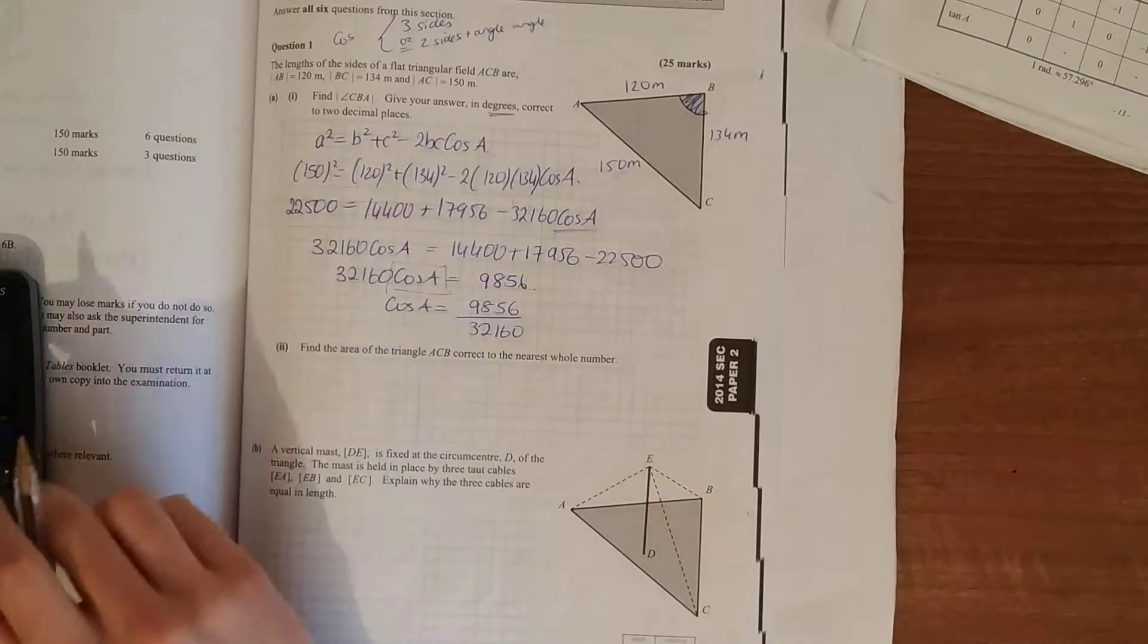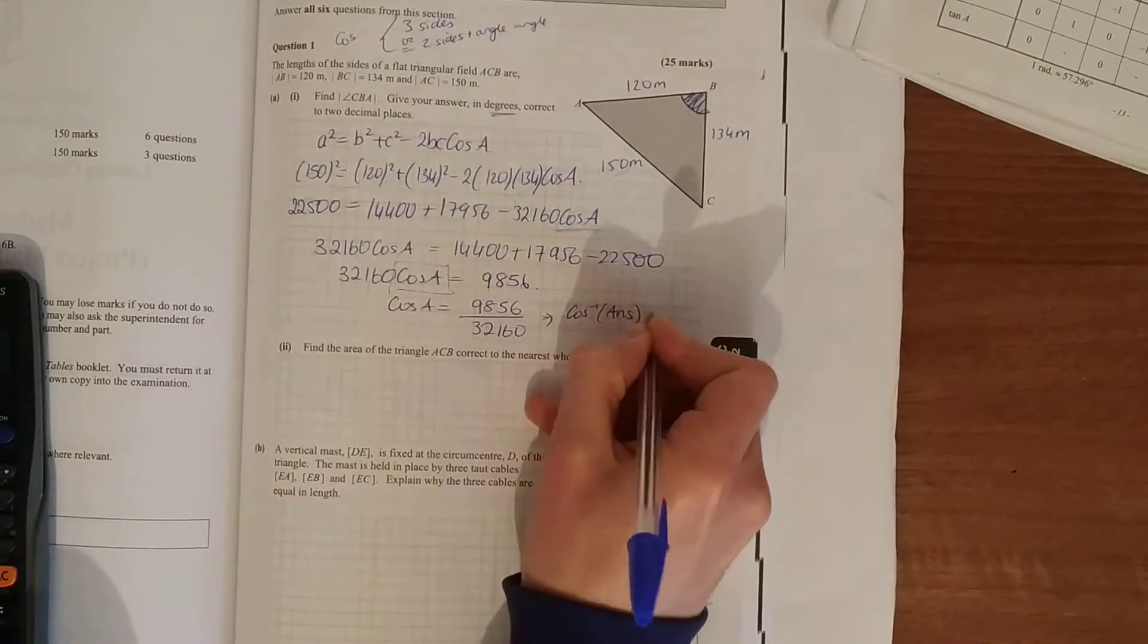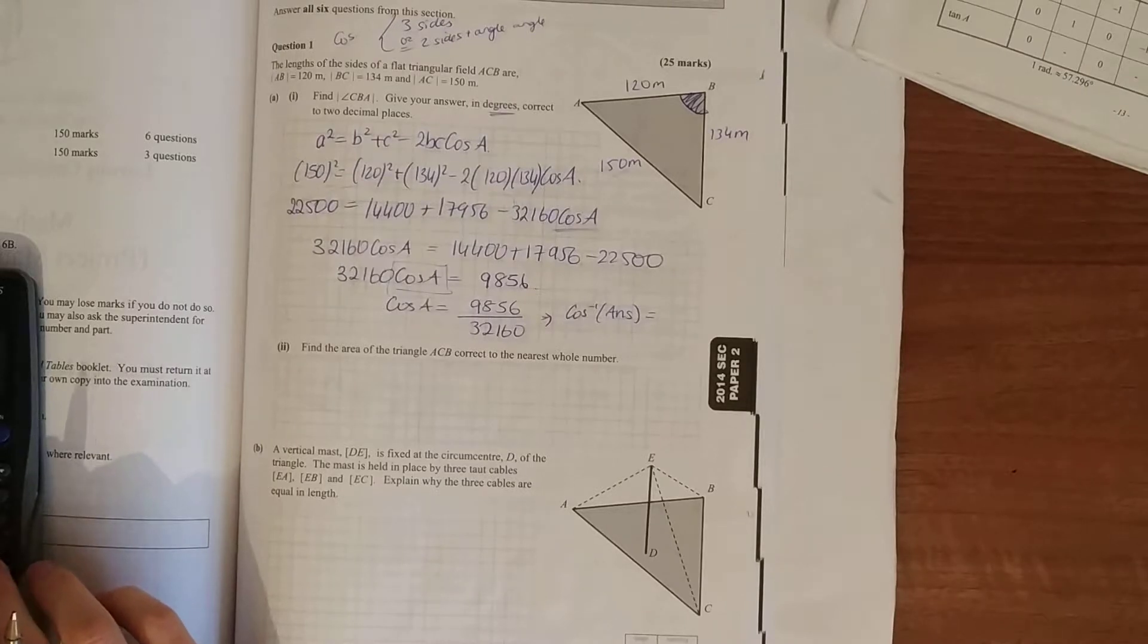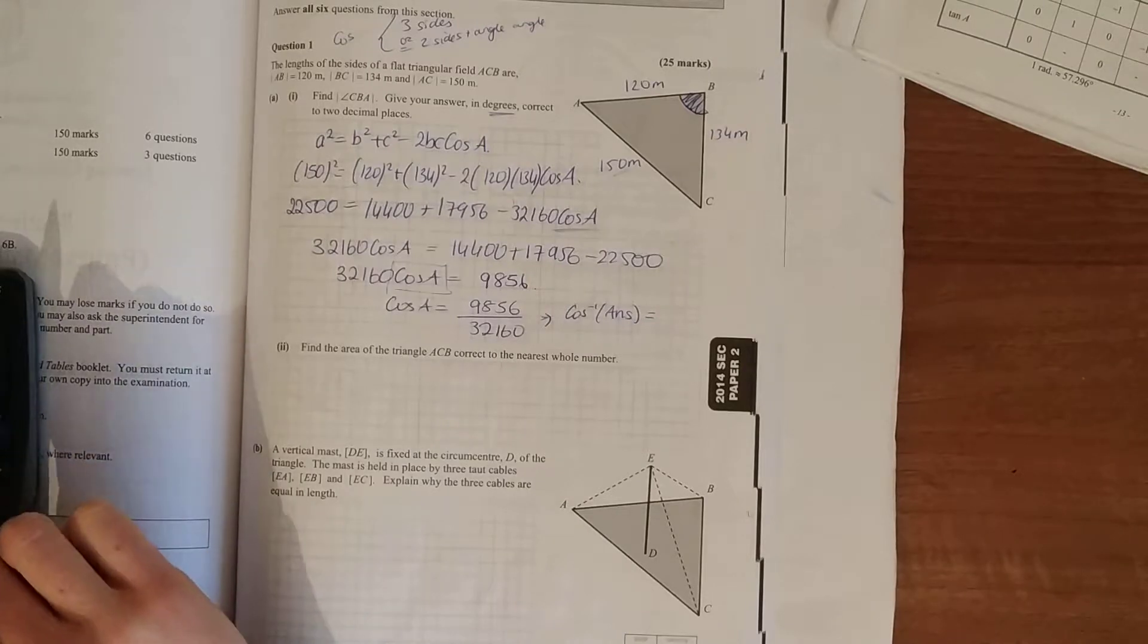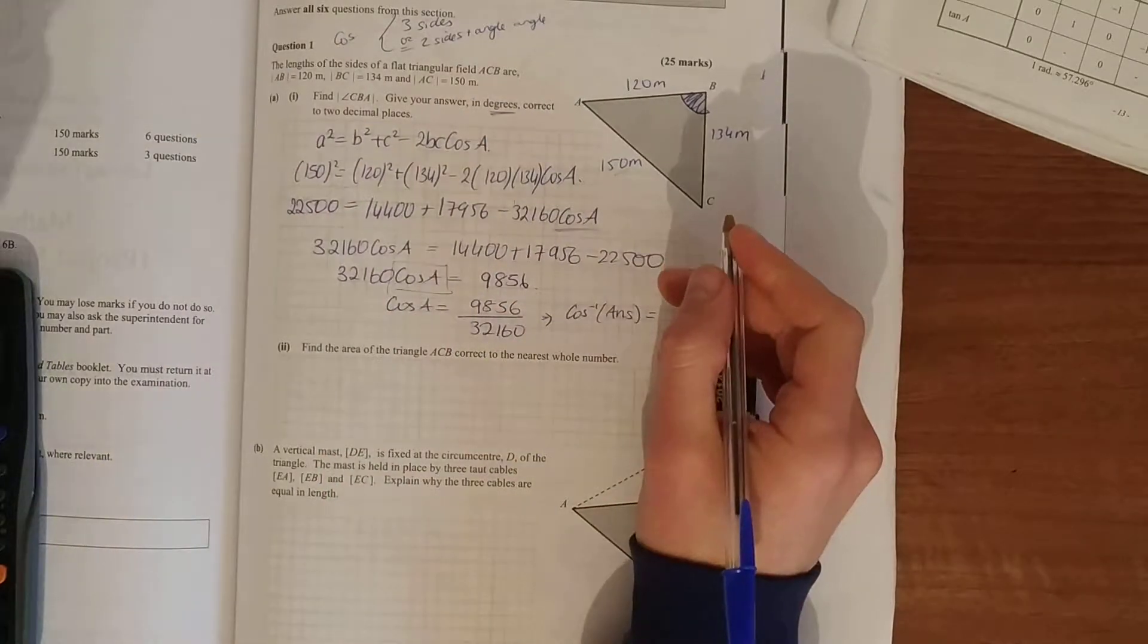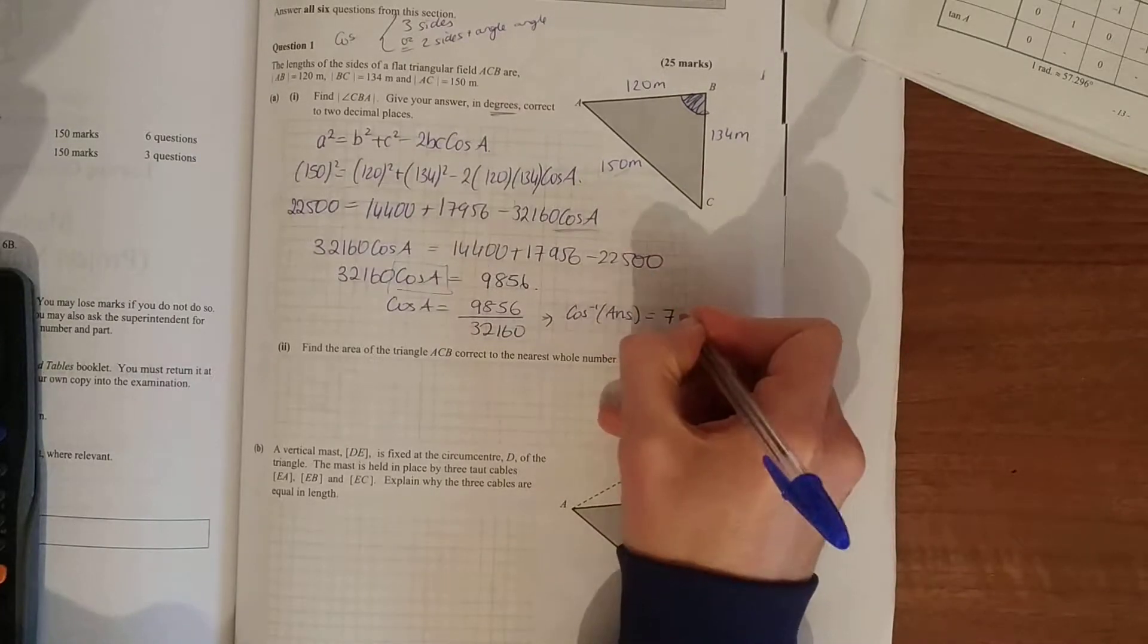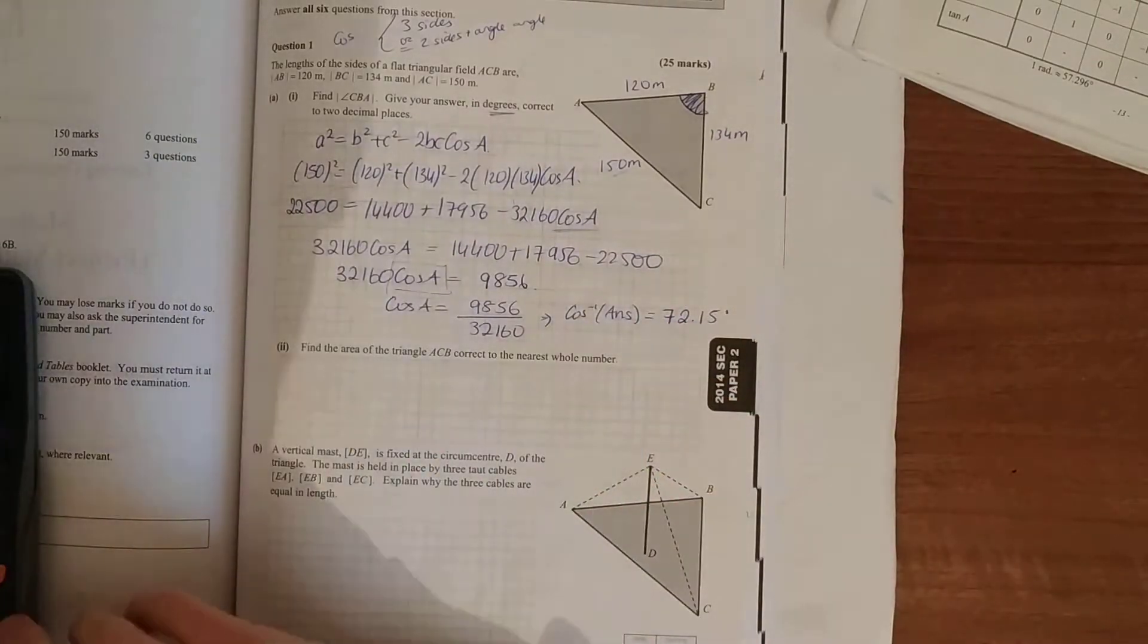And then to work out the angle you do cos inverse of that. Just make sure you're in degrees. So shift cos inverse. Otherwise you get a really small answer. I've got an answer of 0.3065. So cos inverse of that answer, 72.15 degrees to the nearest one decimal place.